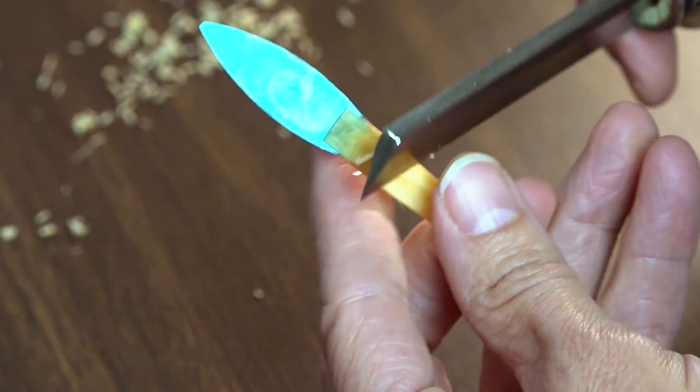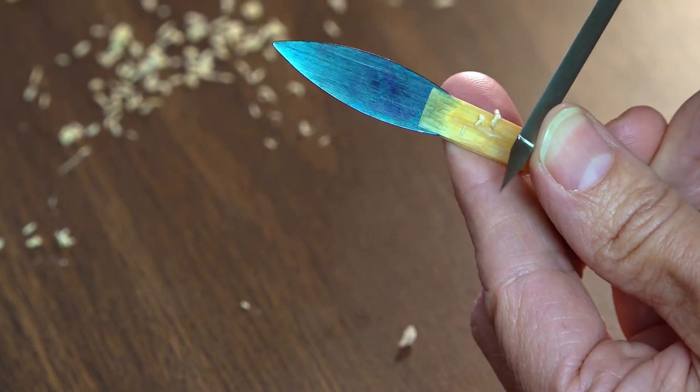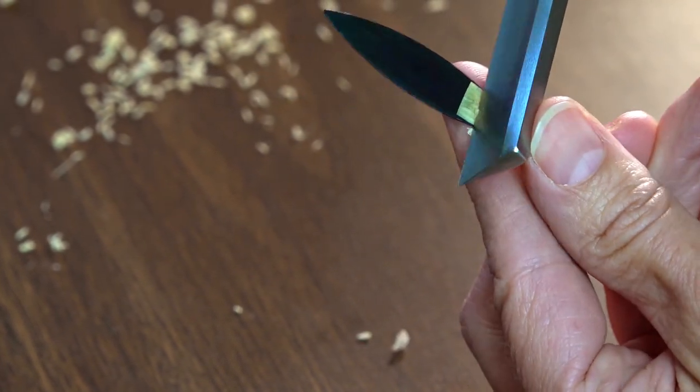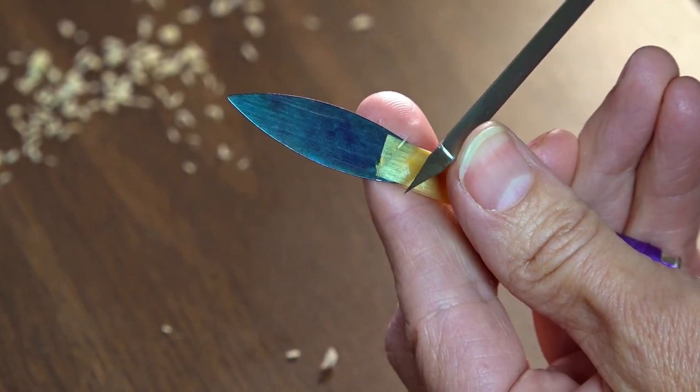The next day, go through the second scrape and let the reed rest again. On the third day, check the balance again and work as needed to get the reed well balanced and vibrant. On the fourth day, if the reed is feeling settled, you can put the wire on.